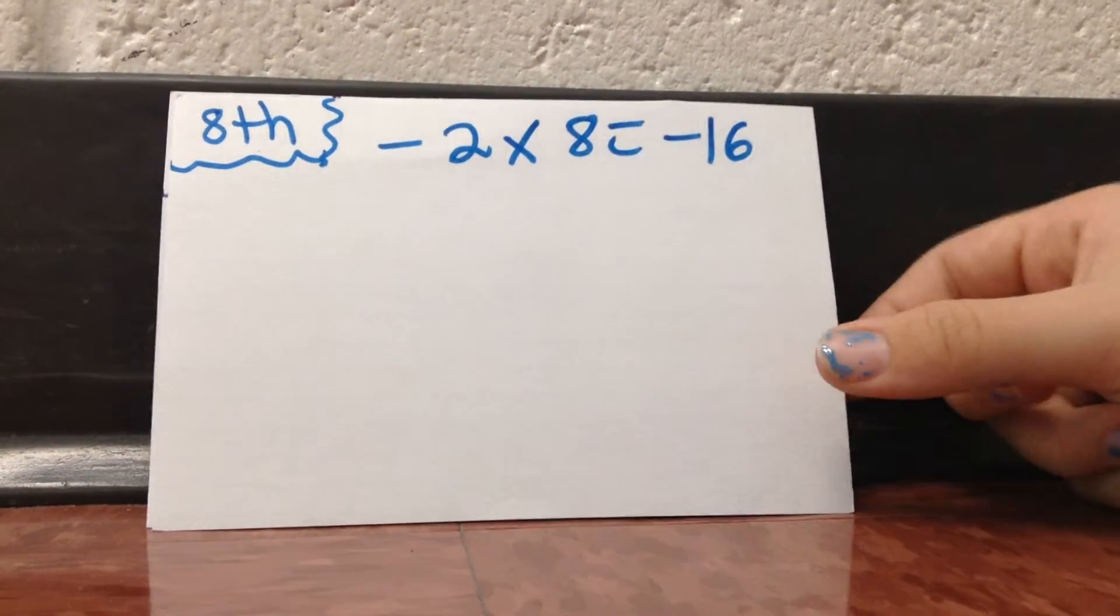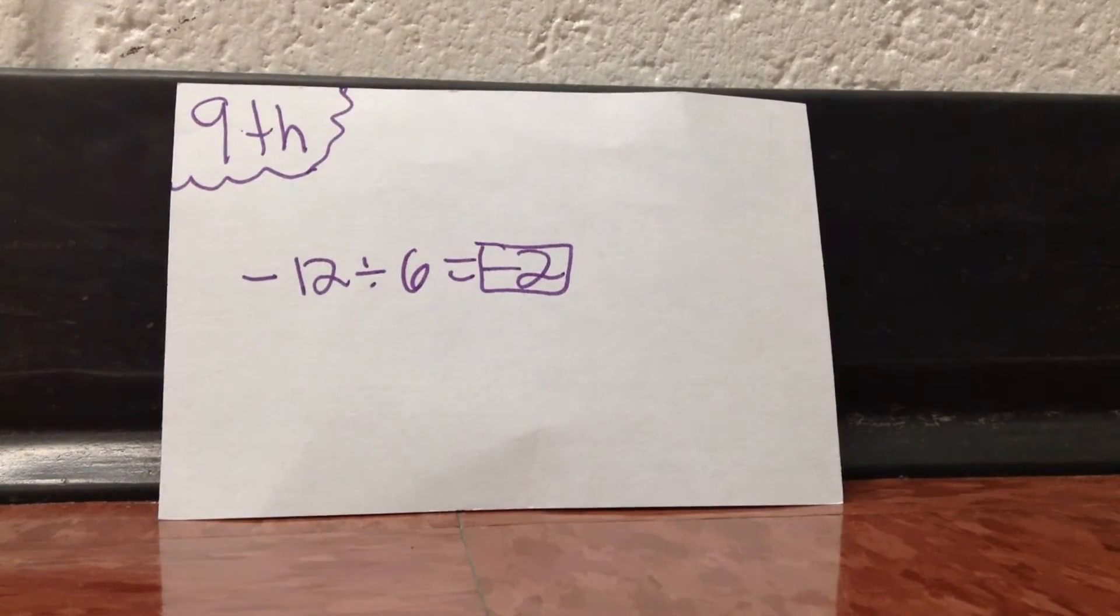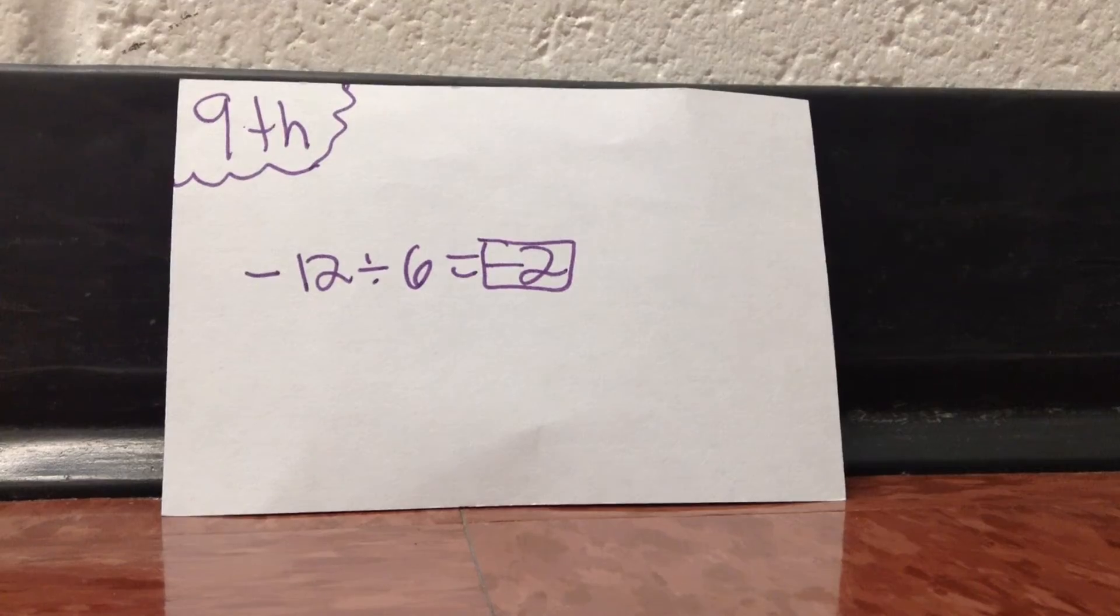Negative 2 times 8 equals negative 16. Negative 12 divided by 6 equals negative 2.